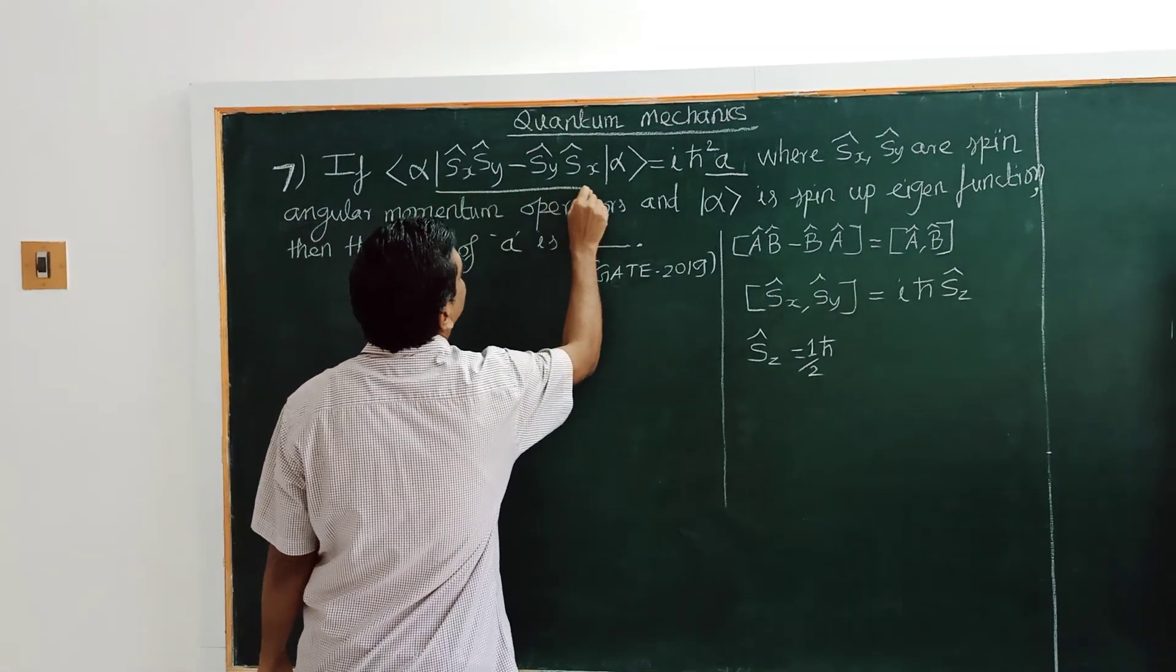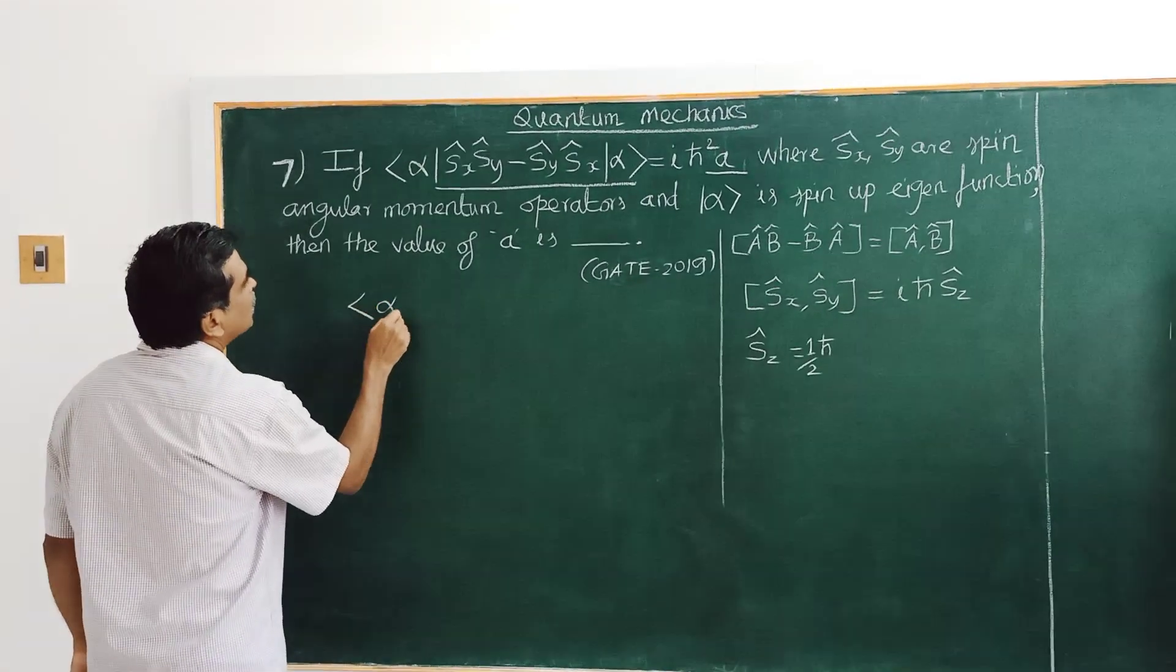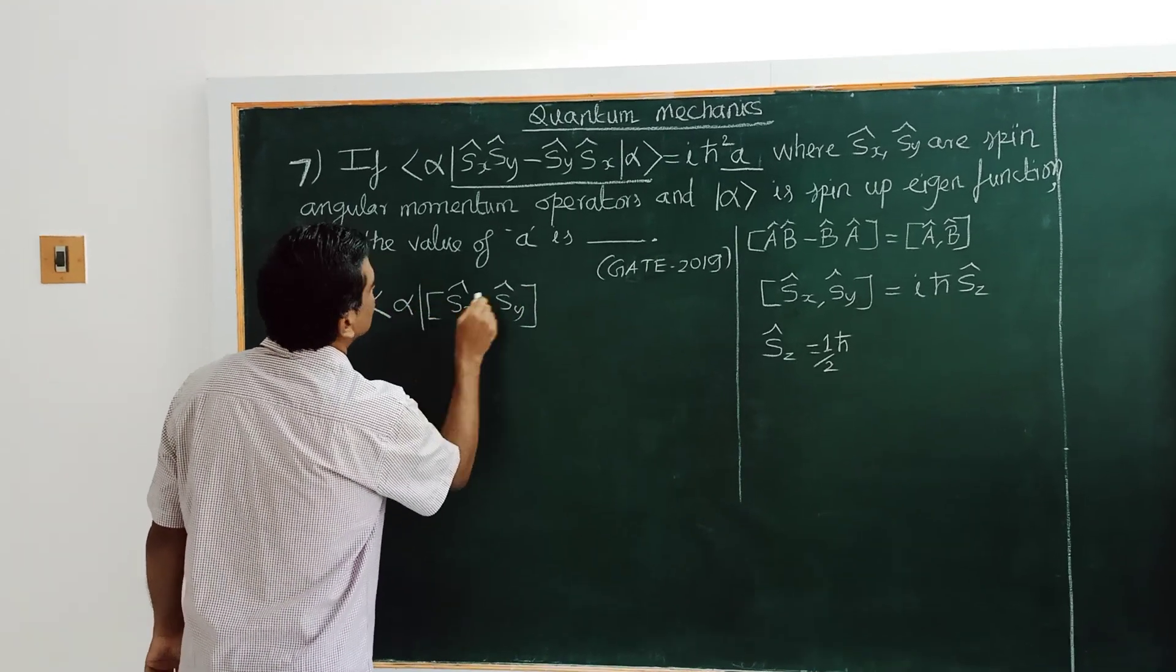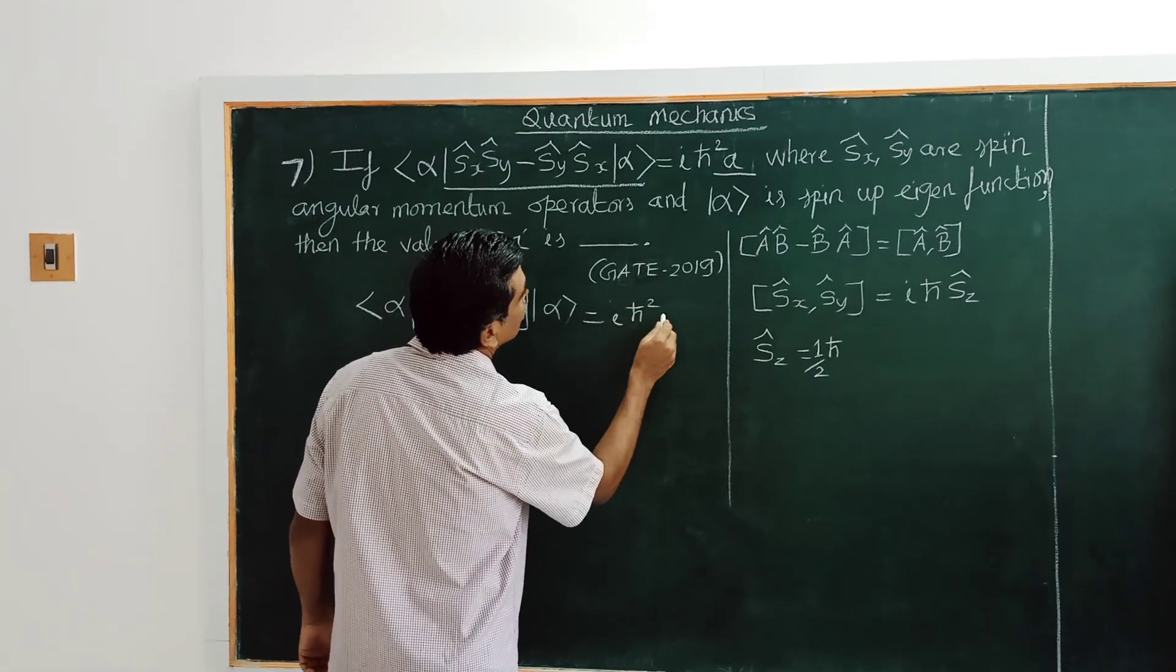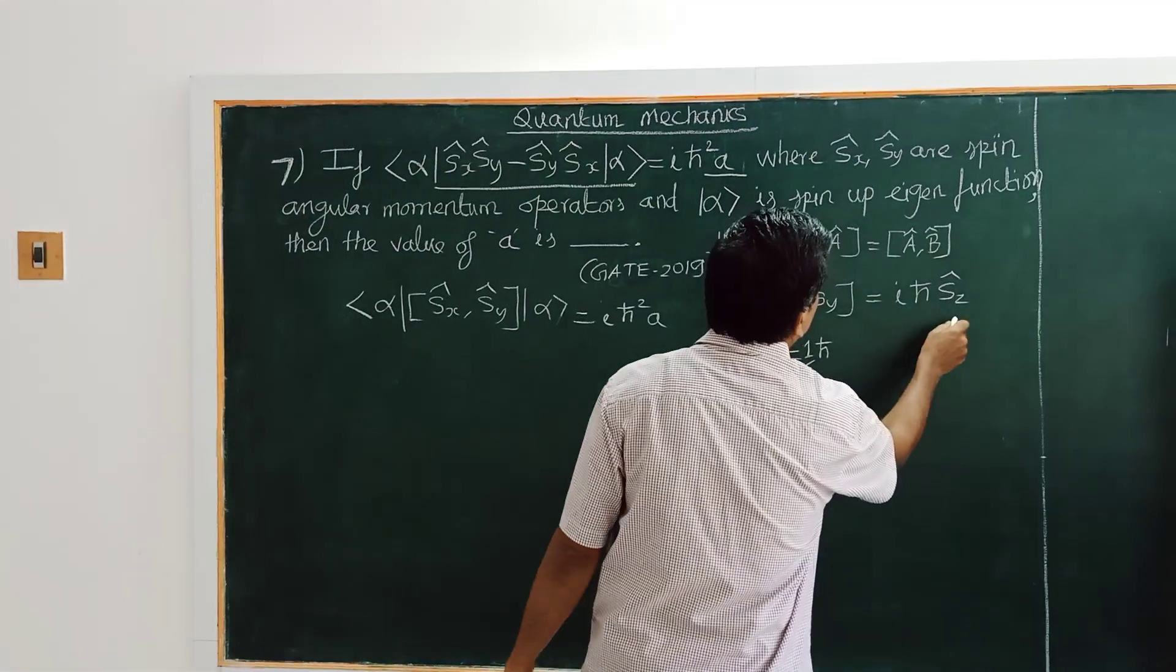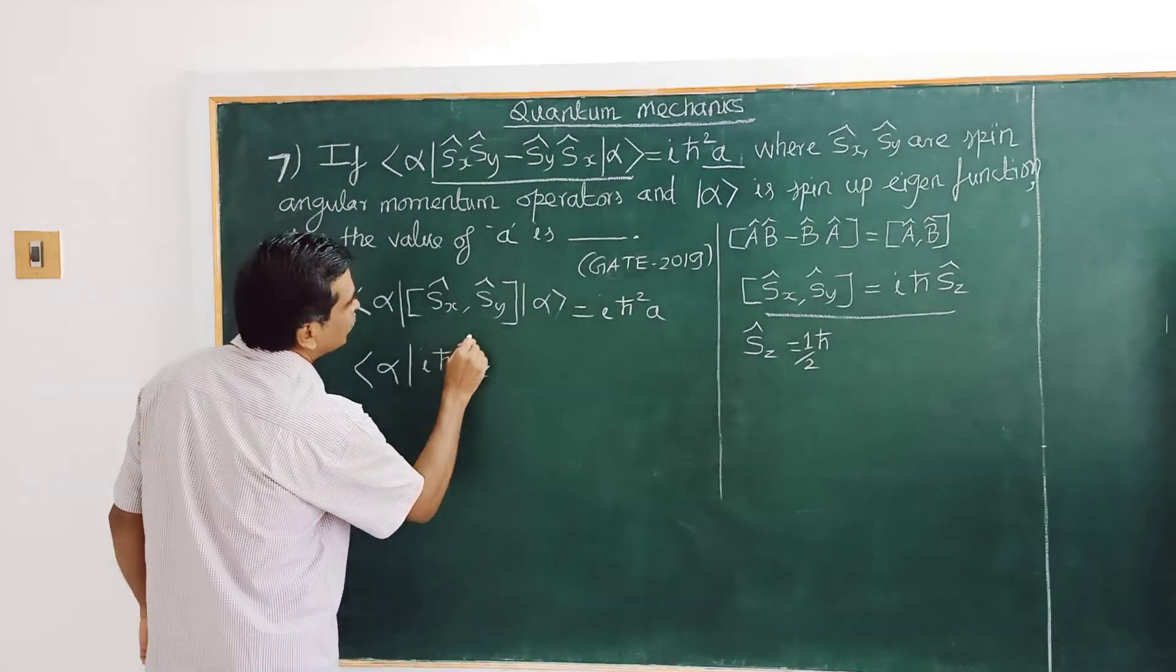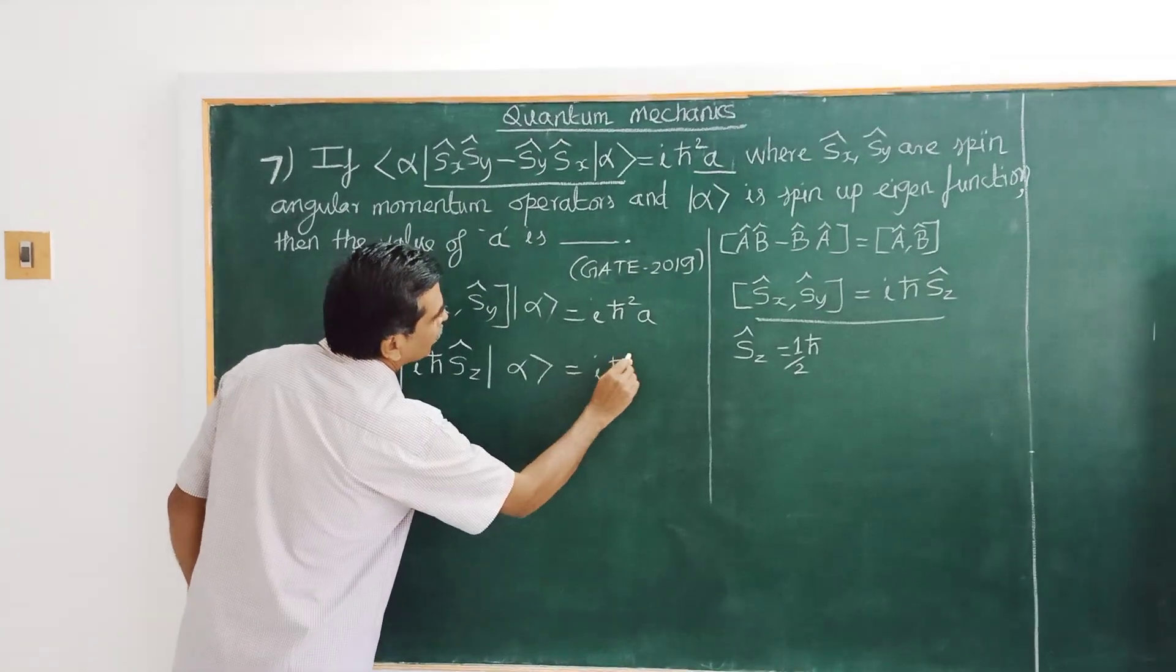gives iℏ cross SZ cap. Okay, now by applying the commutator operator rule, we can write this. Let's cross square into A. And according to this rule, we will write SZ cap alpha equal to iℏ X cap A.